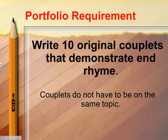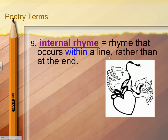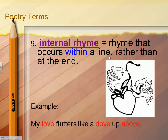Your assignment is to write ten couplets that demonstrate end rhyme. They do not have to be on the same topic, but the couplet itself must be a cohesive unit that shares one idea. Next word is internal rhyme — rhyme that occurs within a line rather than at the end. For example, my love flutters like a dove up above — it's occurring within this line, not at the end.